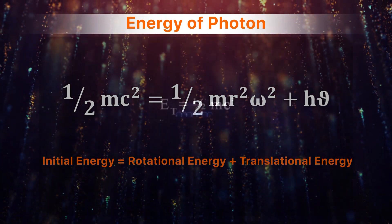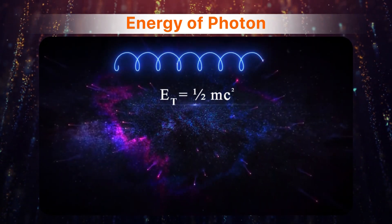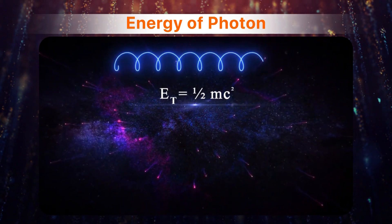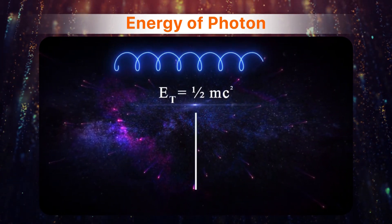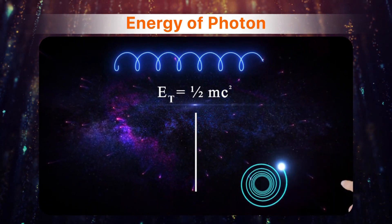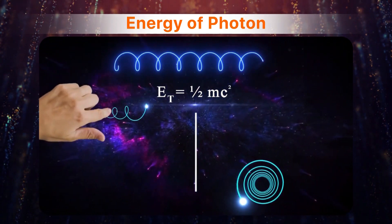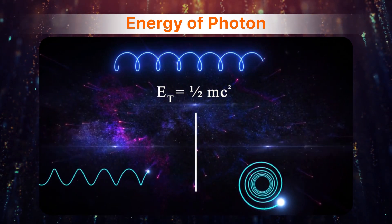The above relation explains that the initial energy of a photon, half of mc square, is divided into two parts at the moment that it is separated from the electron: Rotational energy, half of mr square omega square, and translational energy, h nu.